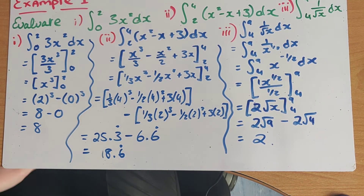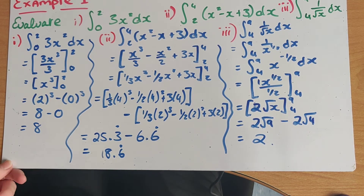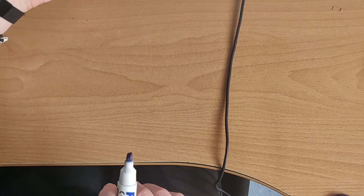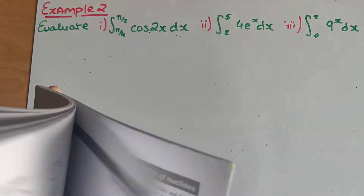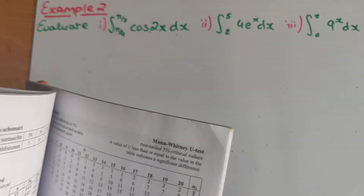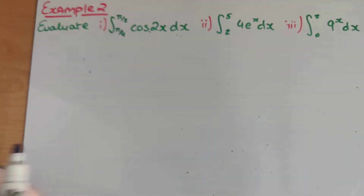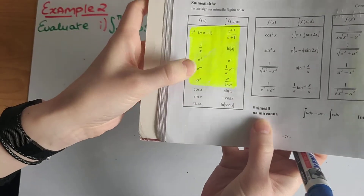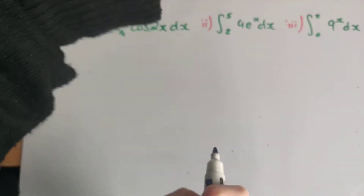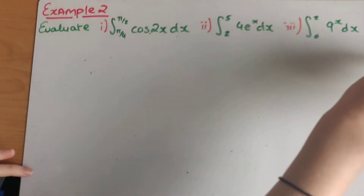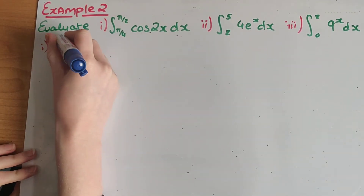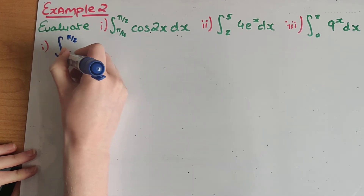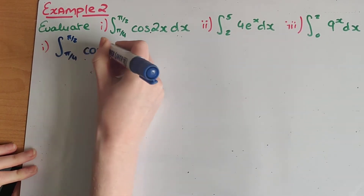So that was an introduction to the definite integral. We're now going to look at examples of using definite integrals with cos and e. What I would do now is take my log tables and open them to page 26, so that I make sure I have all my rules in front of me. So let's look at part one: evaluate the definite integral from π/4 to π/2 of cos(2x) dx.